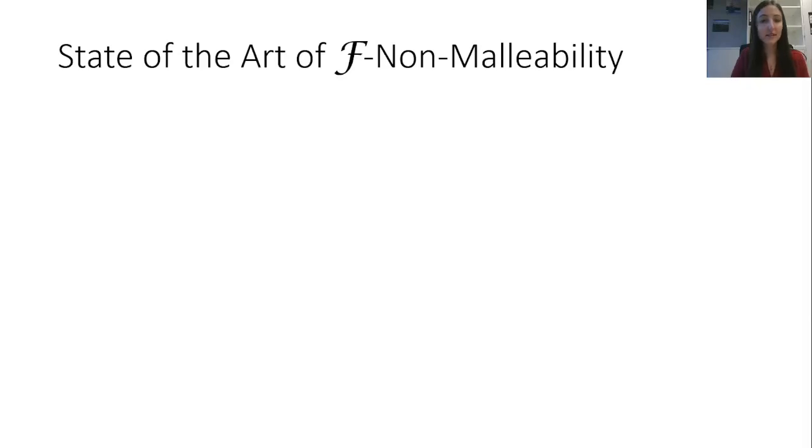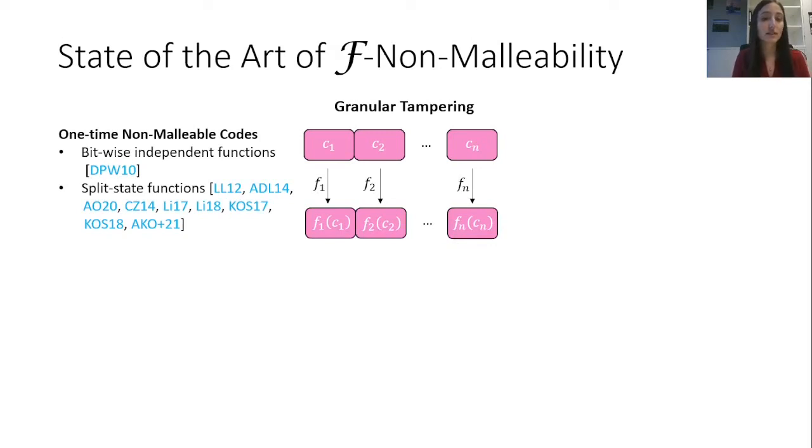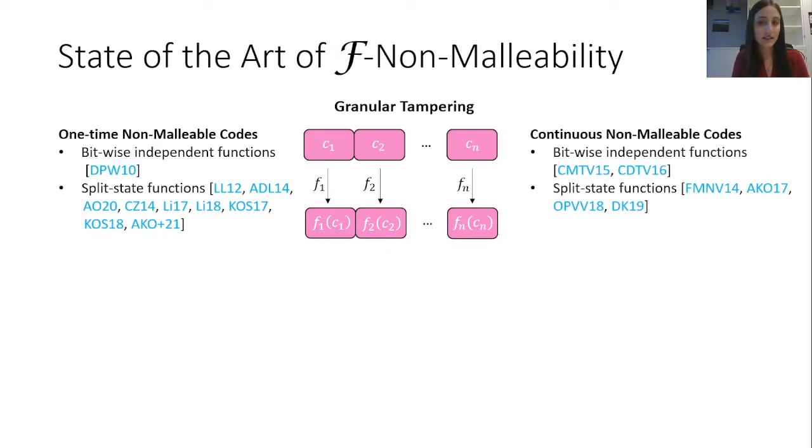This gap is even more evident when one looks at the state-of-the-art of f-non-malleable codes. Recently, research has focused a lot on granular tampering, where each tampering function divides the codeword into predefined blocks and tampers with each block independently. In this case, many interesting one-time constructions are available, and many were already extended to the continuous setting.